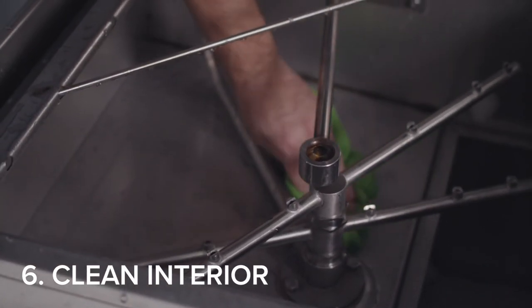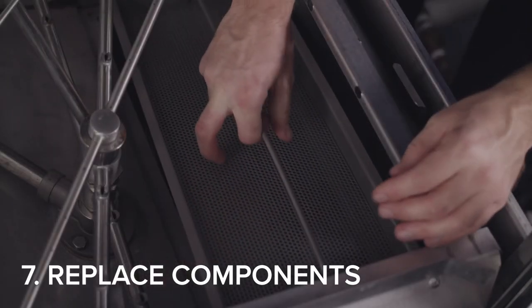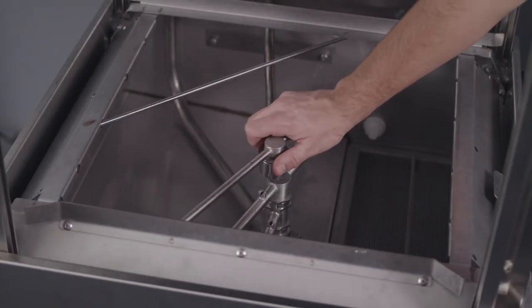Then spray or wipe down the interior of the machine. The sump strainer, scrap screen, standpipe, and wash and rinse arms can now be replaced.